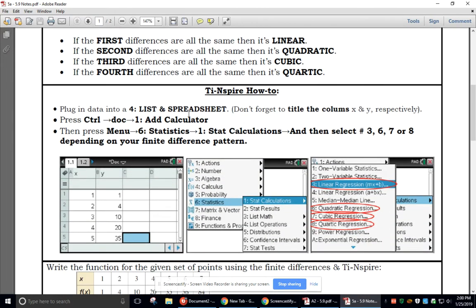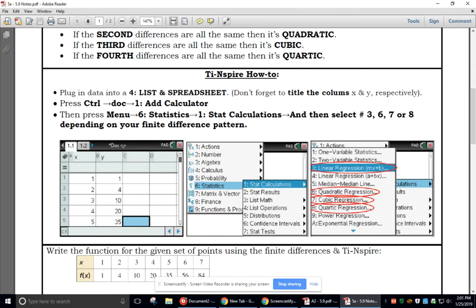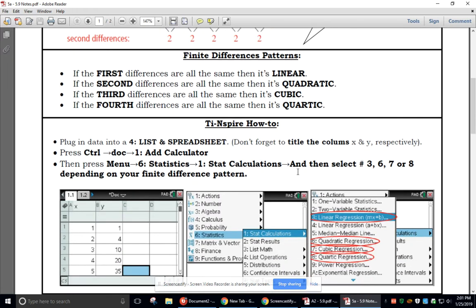And so here are the TI-Nspire steps of how to run a linear regression, quadratic regression, cubic regression, or quartic regression. It all depends on what that finite difference is, because it'll take a long time to plug it in and do like a guess and check. So you want to do that finite difference first to A, show your work, and B, lead you to which type of function it'll be, and that'll tell you which type of regression to run.